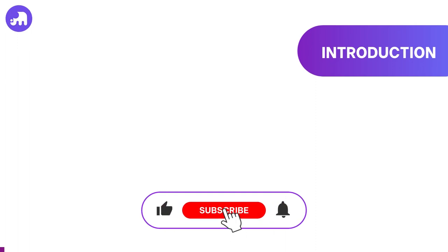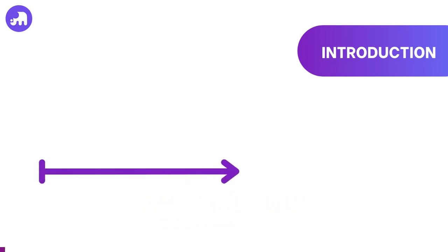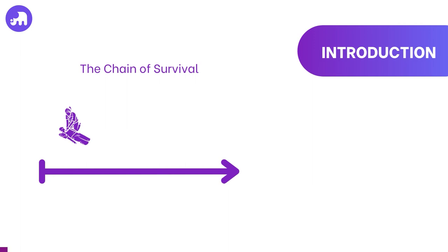Resuscitating a patient who has experienced a cardiac arrest involves several essential stages, sometimes referred to as the chain of survival. Here we'll simplify it into the three most common phases. First, we have basic life support. During this crucial phase, the focus is recognising the emergency, sending for help and commencing CPR. This phase focuses on maintaining oxygenated blood flow, ensuring the heart remains warm, adequately perfused, oxygen rich and in a balanced pH state.